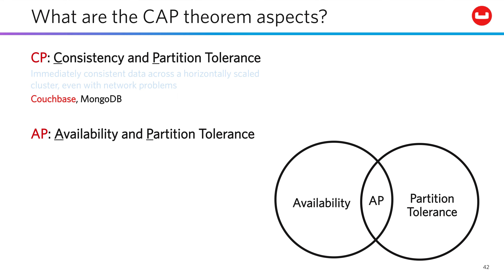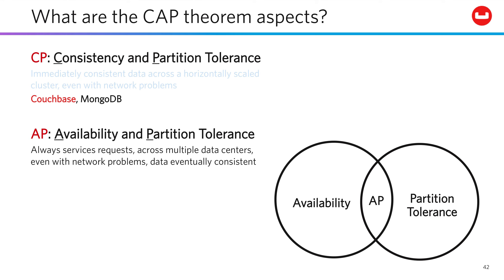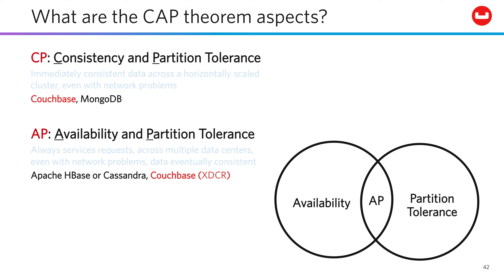However, if you choose an AP software design, emphasizing availability and partition tolerance, then any node you can contact will always service a request, even across multiple data centers, but you may need to wait for the network gap to be repaired before you can be sure the data you're receiving is consistent across all nodes. Apache HBase, DataStax, and Cassandra all fall into this aspect, as does Couchbase if you're looking to serve the same data from multiple data centers using cross-data center replication.